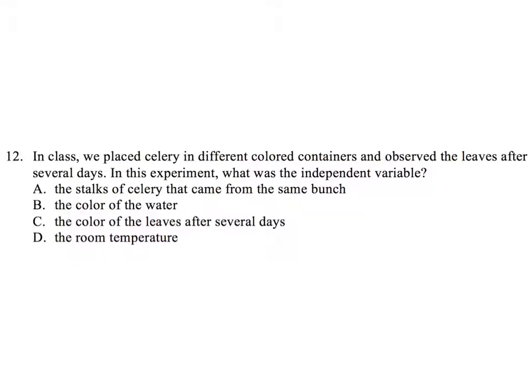Question 12. In class, we placed celery in different colored containers and observed the leaves after several days. In this experiment, what was the independent variable? A. The stalks of celery that came from the same bunch. B. The color of the water. C. The color of the leaves after several days. D. The room temperature.